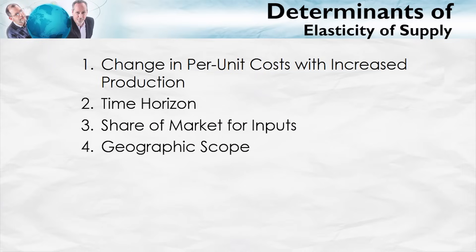What are the major determinants of the elasticity of supply? First, and most importantly, how do unit costs change with increased production? Second, the time horizon. Third, share of market for the inputs. And fourth, geographic scope. I'll explain each of these in turn.